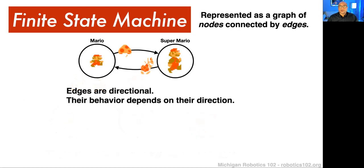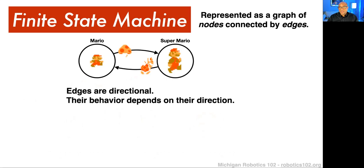We should note that edges are directional. The cause doesn't just happen in both ways. For instance, if Mario touches the mushroom he turns into Super Mario, but if he touches that mushroom again he doesn't turn back into regular Mario — he stays Super Mario. In order for him to go back from Super Mario to regular Mario, he has to touch an enemy the wrong way. These edges are directional; their behavior depends on their direction.